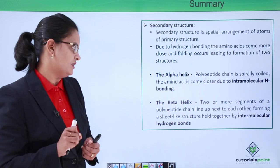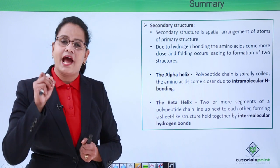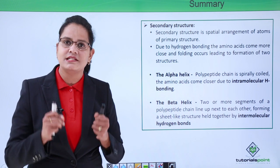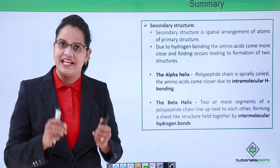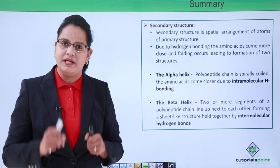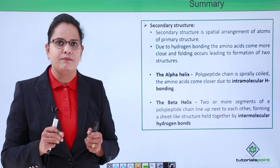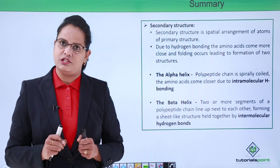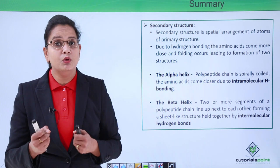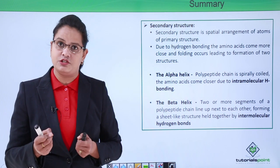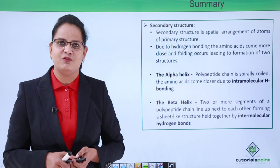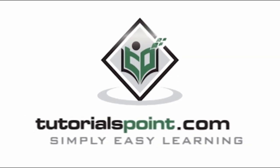Both structures are very strong. Alpha helix is found in nails and claws, and beta pleated structure is found in fibroin of silk. This was all about secondary structure. Now we will move to tertiary structure. Till then, thank you very much — TutorialsPoint.com, simply easy learning.